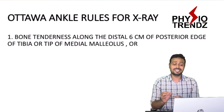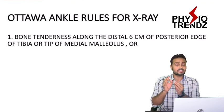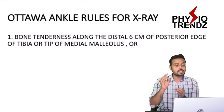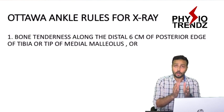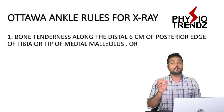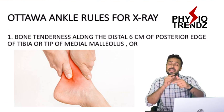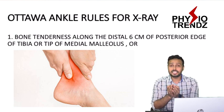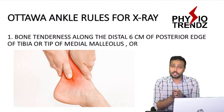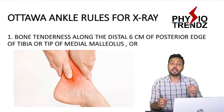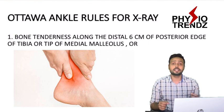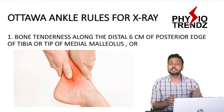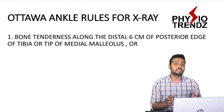The first criterion is bone tenderness along the distal 6 centimeters of the posterior edge of the tibia or the tip of the medial malleolus. Basically, whenever a patient complains of pain in the lower 6 centimeters of the tibia along with tenderness in the medial malleolus, we should definitely prescribe an x-ray investigation.